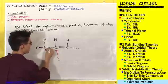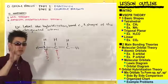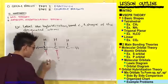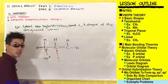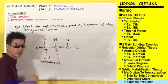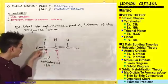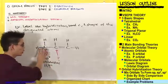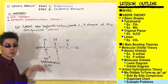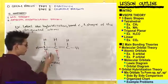This nitrogen has one, two, three sigma bonds and one lone pair, giving a combination of four sigma bonds and lone pairs. So this nitrogen has a hybridization of sp3. If it's sp3, it's going to be tetrahedral with bond angles of 109 degrees. Now let's do the same thing for this carbon.